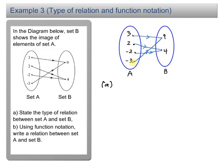So you can see that 3 and -3, 3 maps to the same image 9, and 2 and -2, 2 maps to the same image 4. So this definitely is a many-to-one relation.